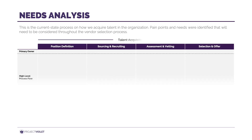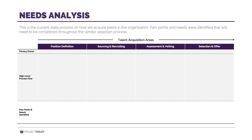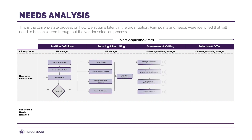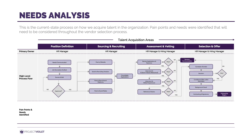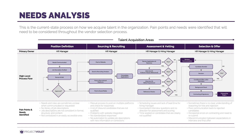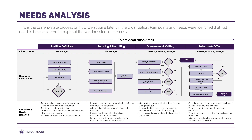Here's a sample of what the needs analysis could look like, using a specific example for talent acquisition. The high-level areas of the talent acquisition process are shown across the top with the primary owner and process flow outlined below. Get the right stakeholders in a room and whiteboard the whole process. This will help engage your team and get more perspectives on identifying pain points and needs for each area.